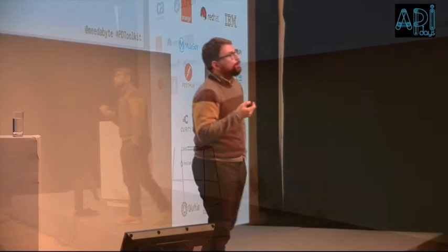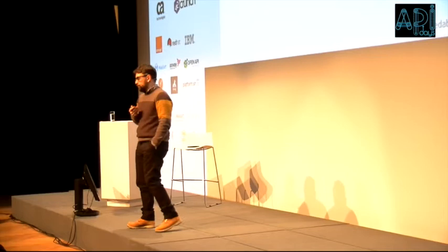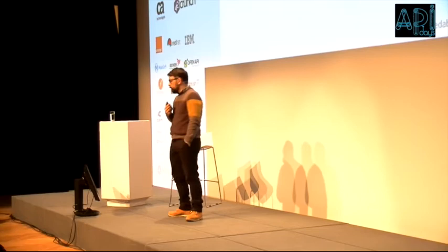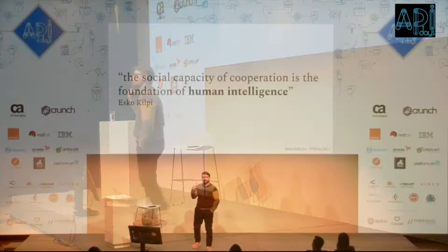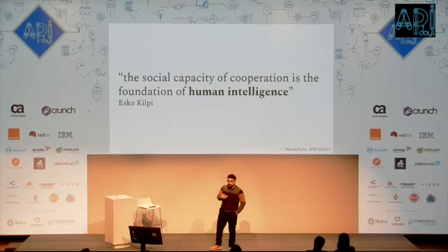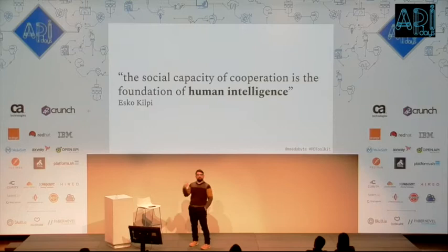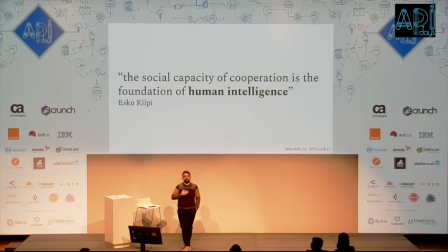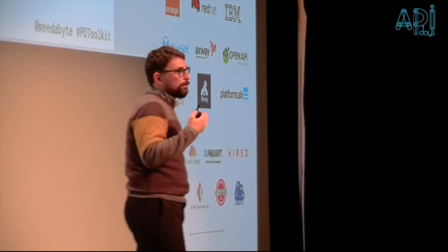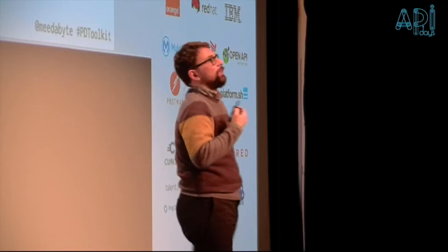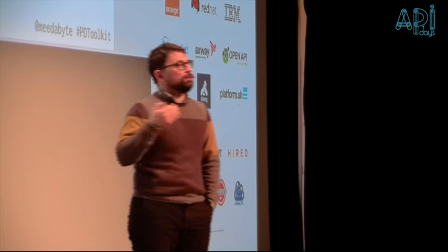What is the approach that a company or an organization should follow when thinking about their API strategy? I start from this quote of Escogepi, which I think is really clear in explaining that in an interconnected world, the only way to develop real intelligence is by interacting with others — being them humans, individuals, small companies, other big companies. The foundation of human intelligence is in cooperation. We need to move from user-centered or consumer-centered design into what we call ecosystem-centered design.